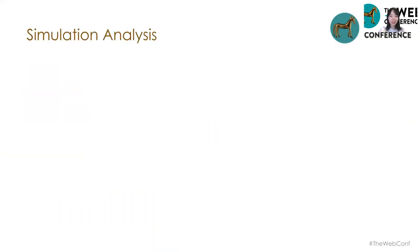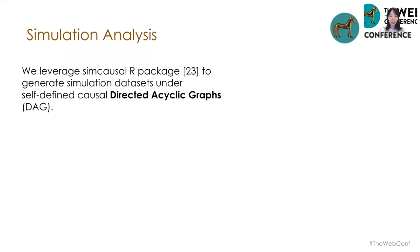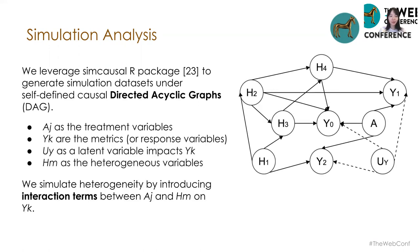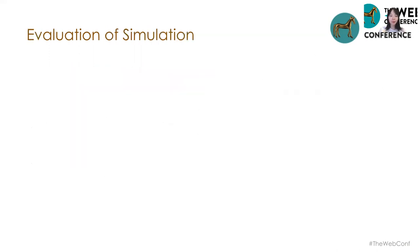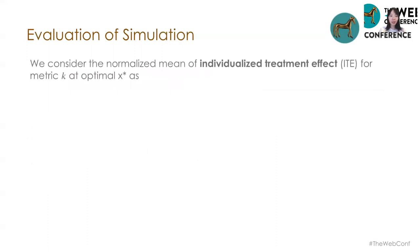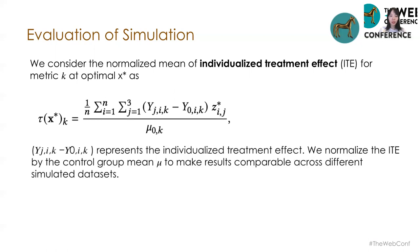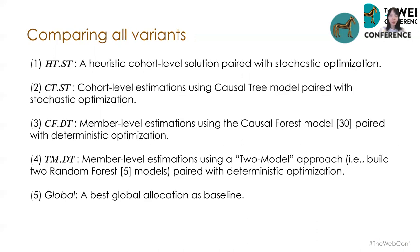With the methodology in mind, let's look at the results. For the simulation analysis, we leverage the causal R package to generate simulation datasets under self-defined causal DAGs. We simulate heterogeneity by introducing interaction terms between treatment variable a_j, the heterogeneous variable h_m, and the outcome variable y_k. To evaluate the different options, we consider the normalized mean of individualized treatment effect as the metric. Due to time limitations, I won't go into the details here.